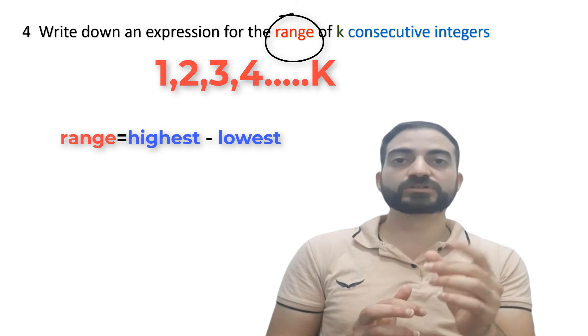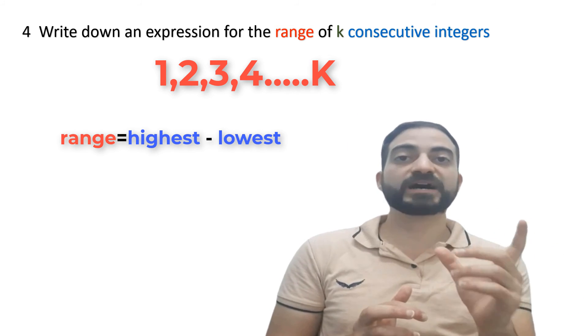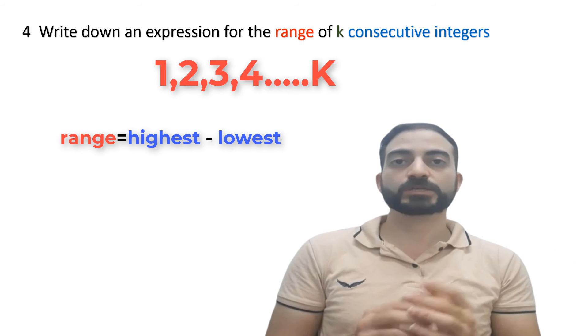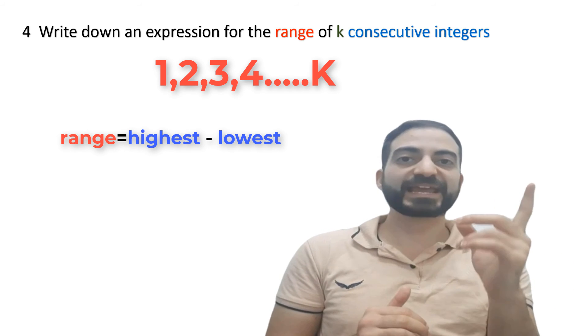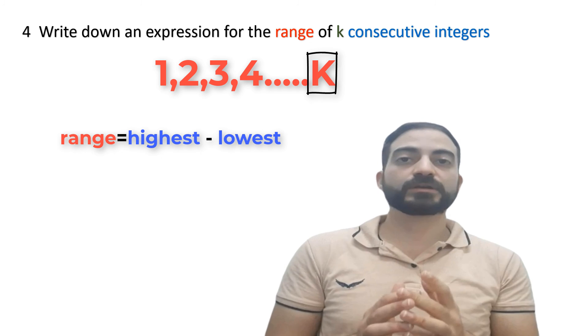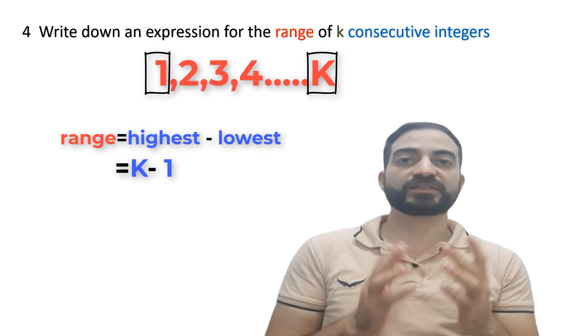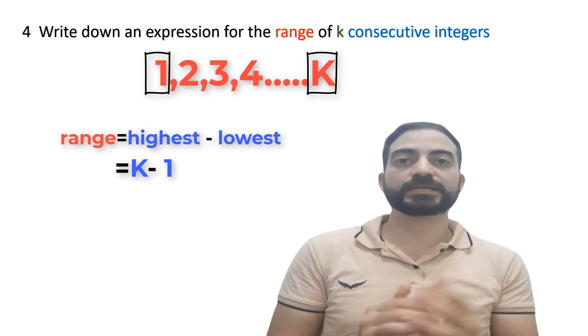There is a rule for range that equals highest minus lowest. So highest here is k and lowest is 1. So we get this answer: k minus 1.